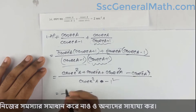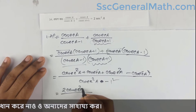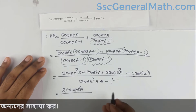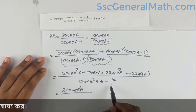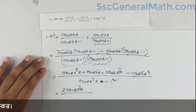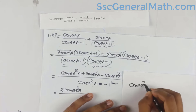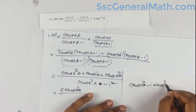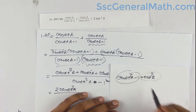Now we calculate: cosec squared a minus 1 squared, minus 1 squared. Using the formula, cosec squared a minus 1 equals cot squared a. So cosec squared a minus 1 becomes cot squared a.